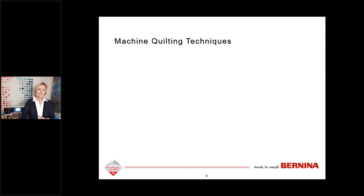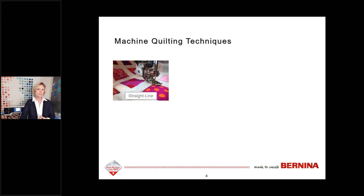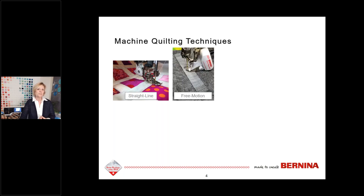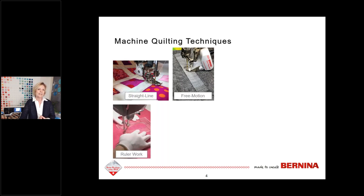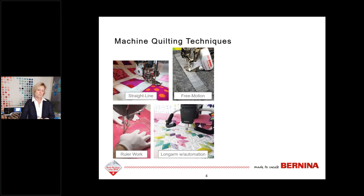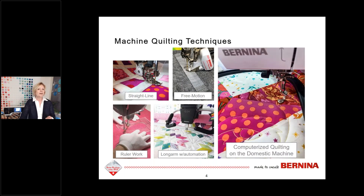Let's begin by looking at machine quilting options typically used when quilting projects. The first option is straight line quilting using the walking foot or Bernina dual feed. Some people prefer lowering the feed dogs and doing free motion quilting. We're also seeing many quilters using ruler work techniques. All three can be done on a domestic or long arm machine. There's also long arm quilting with automation for great precision. And now there is one more technique available to anyone with a domestic machine and embroidery module: computerized quilting.